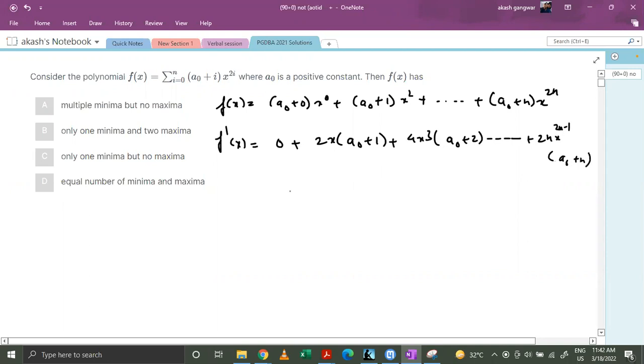Now we can see that x is a common term in f'(x). So basically x times [2·a₀ plus 1 plus 4x²·a₀ plus 2 till 2n·x raised to power 2n minus 2·a₀ plus n].